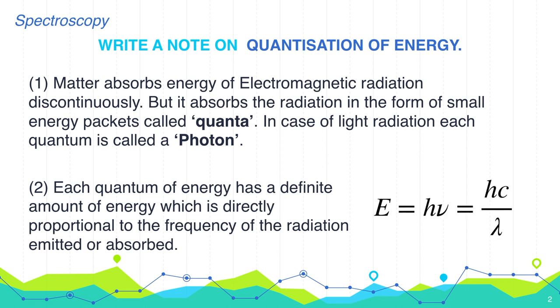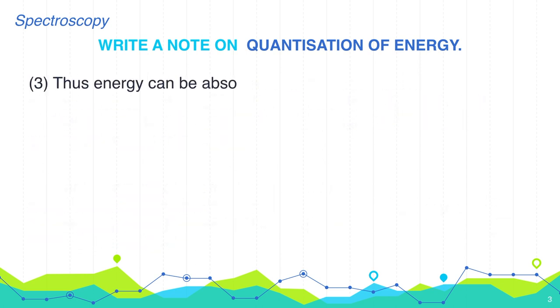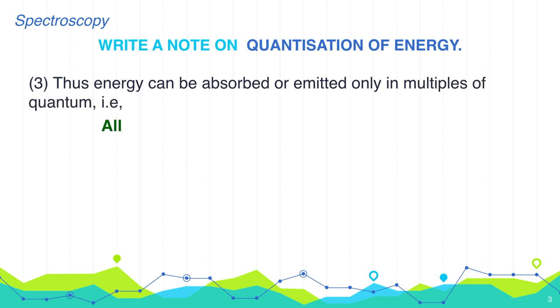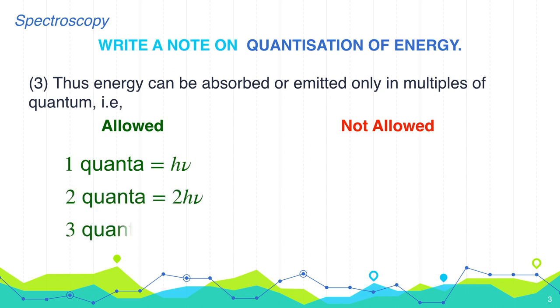Energy E equals h nu, which is also equals to hc by lambda. Thus, energy can be absorbed or emitted only in multiples of quantum. That is, 1 quanta, 2 quanta, or 3 quanta. So h nu, 2h nu, or 3h nu are allowed absorption or emission.